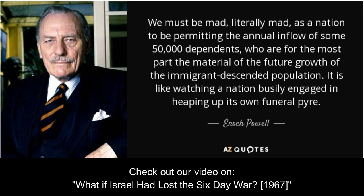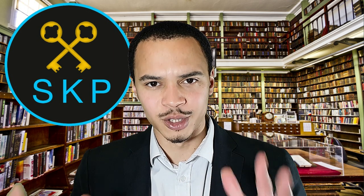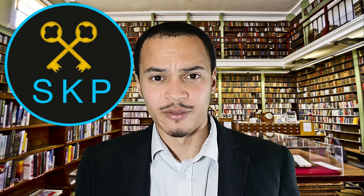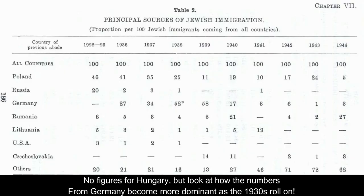These figures would have alarmed even Enoch Powell — whereas he spoke of rivers of blood over a tiny percentage of immigrants to Britain, here the numbers were far larger, and unlike in Britain, there really were rivers of blood. Most of these Jews weren't ideological Zionists; many were humble refugees fleeing persecution in Europe — particularly from anti-Semitic governments in Poland and Hungary in the 1920s and 1930s. Then from 1933 German Jews also began wanting to leave for very obvious reasons.